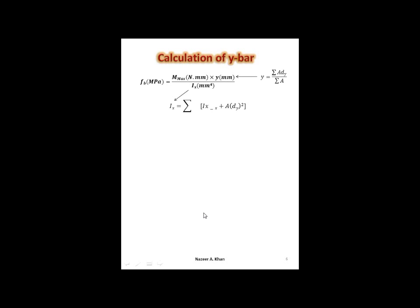To calculate the bending stress, we need to use this formula. Bending stress in MPa is equal to maximum moment in newton per millimeter times the y-bar in millimeters, and the inertia value is in millimeters to the fourth — this is the inertia value for the complex shape. When we look at the moment, we already picked it off from the previous diagram, so we have that already. These two values we don't have, and the formula for calculating the y-bar is right there.